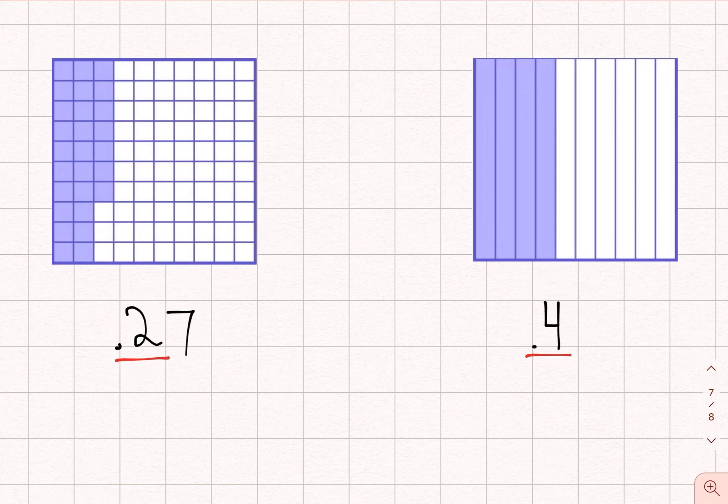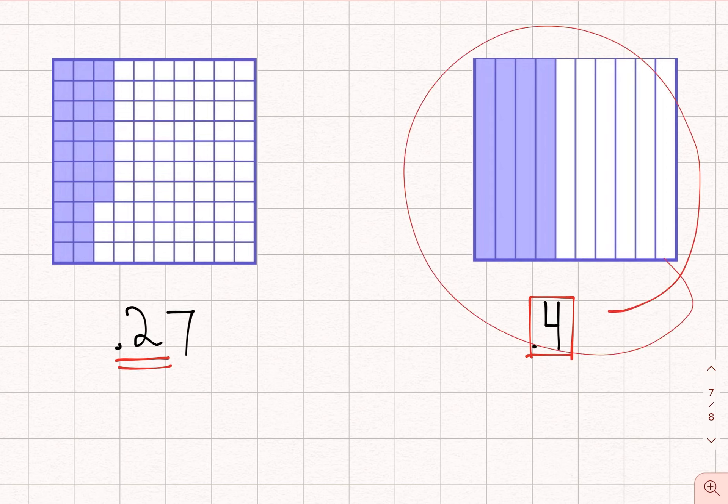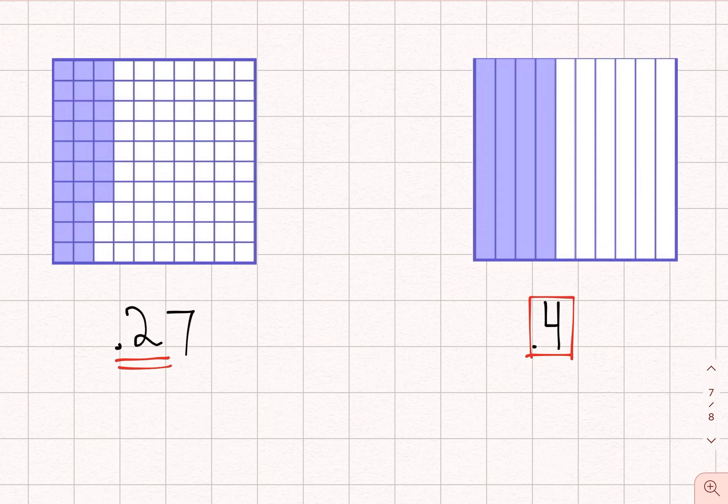So in this case, four is greater than two. So this fraction will be bigger. Never mind that seven is also a big number, because 27 hundredths is smaller than four tenths. So again, the rule here is take a look at the first place value and determine which one is greater. And that will tell you which decimal fraction is the greater decimal fraction.